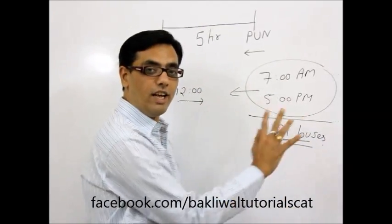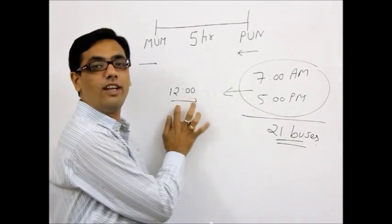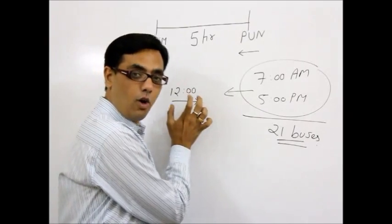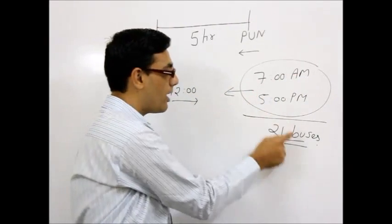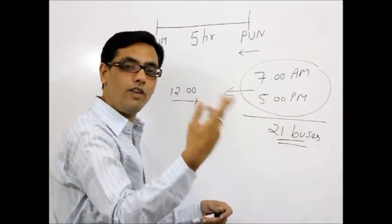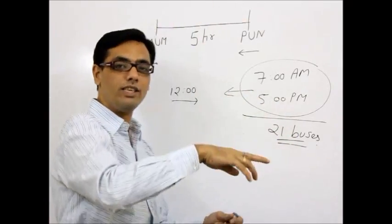Now, what's the learning from this question? Let's start with saying, the learning is clock time. The moment you give the clock time and you do a backward calculation as well, you will come to the answer. Otherwise, you will always think 5 hours, every half an hour meeting, 10 buses plus 1, 11.